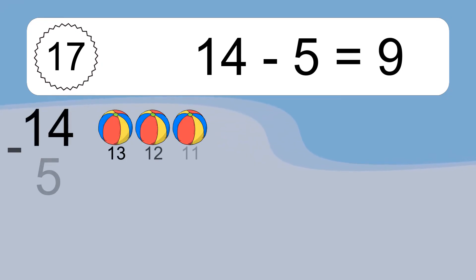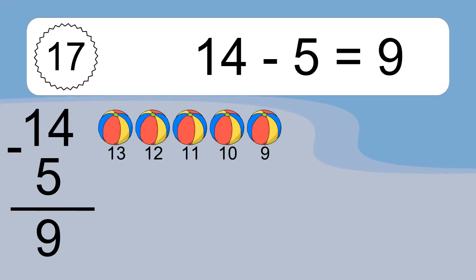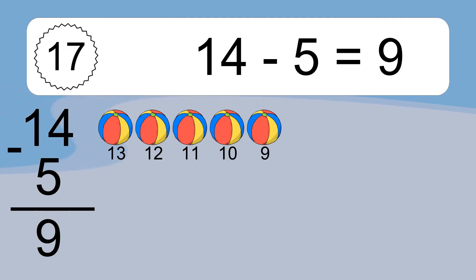14 minus 5 equals what? 14 minus 5 equals 9. Let's count it: 13, 12, 11, 10, 9.